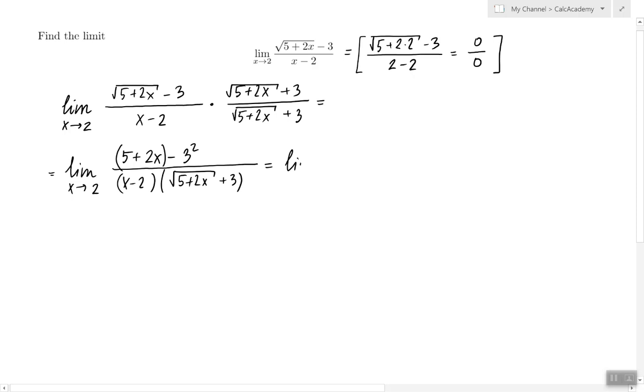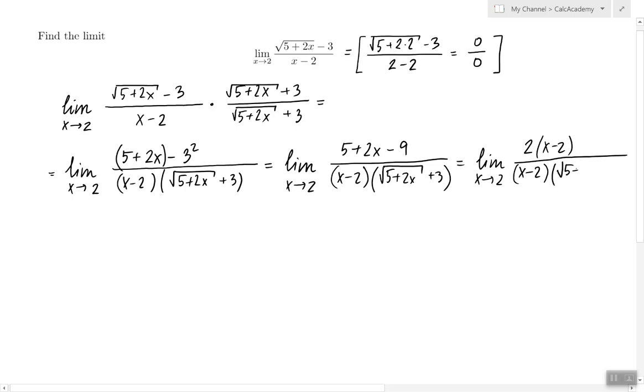Let's simplify the numerator and we're almost there. 5 plus 2x minus 9 is 2x minus 4 and I can factor out 2 and now we see that factor x minus 2 in the numerator that we couldn't see earlier.